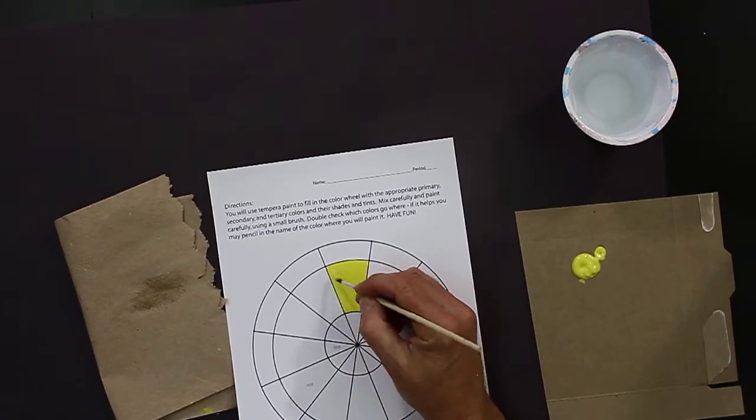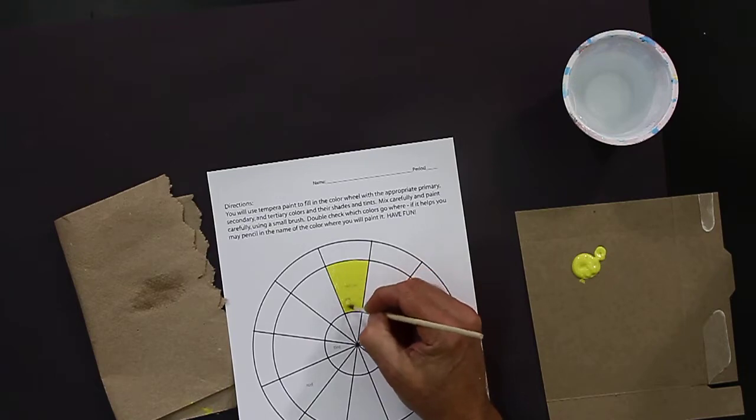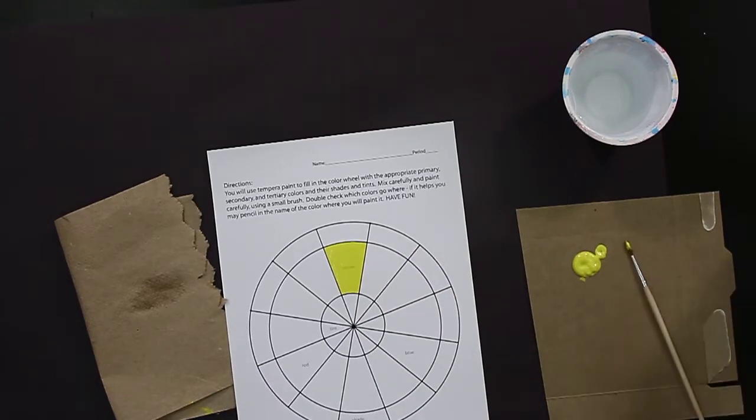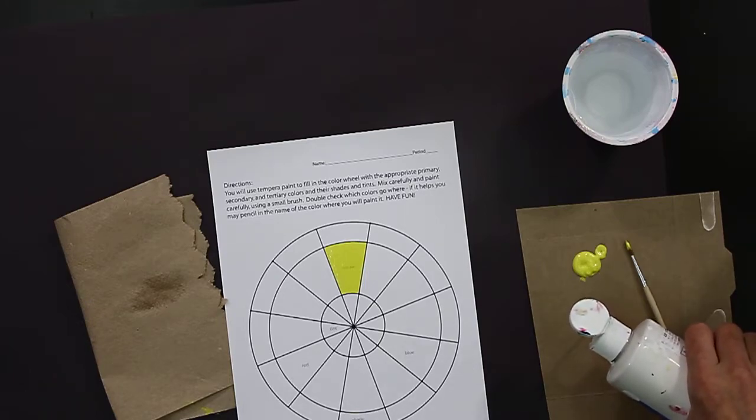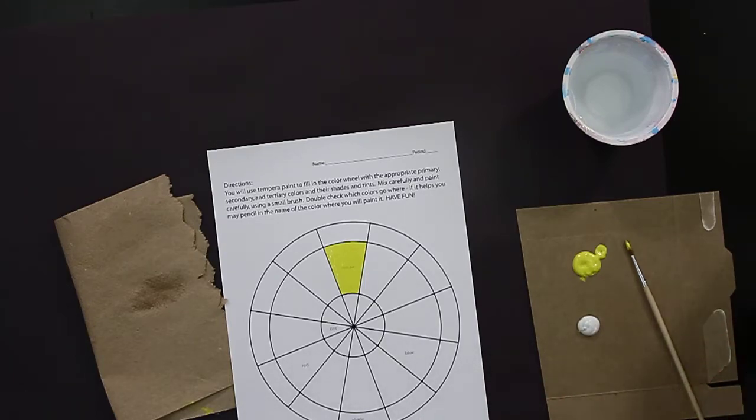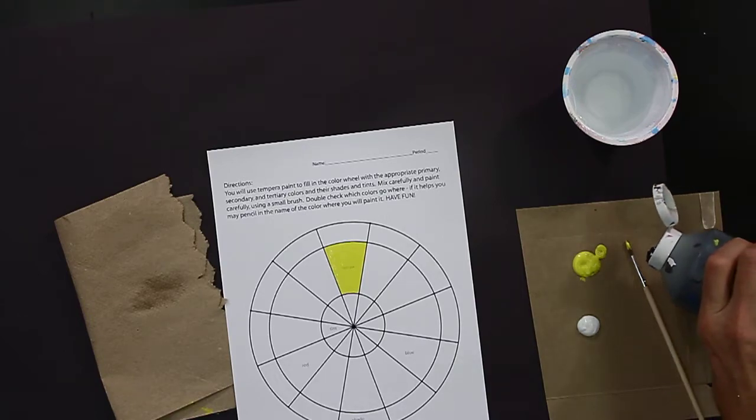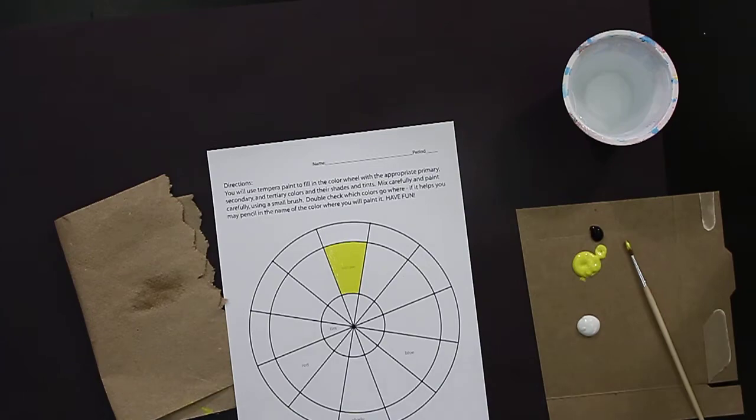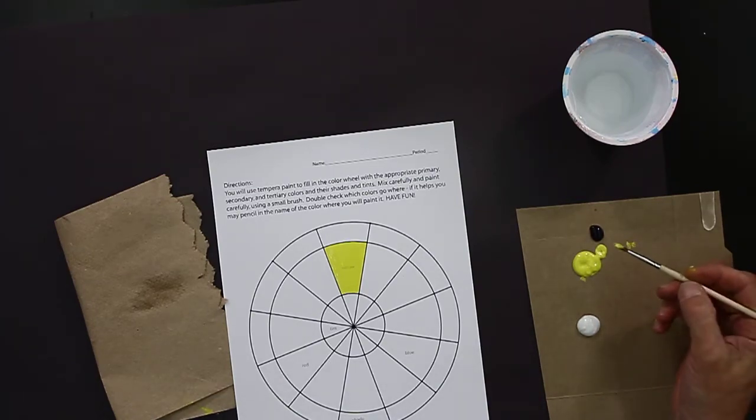When the time comes you can mix your white and your black paint into your color in order to create shades and tints. And again, you don't need much paint, just a little bit, especially with black because black is a very powerful pigment. And if we add too much black you can very easily make the color get dark very quickly.